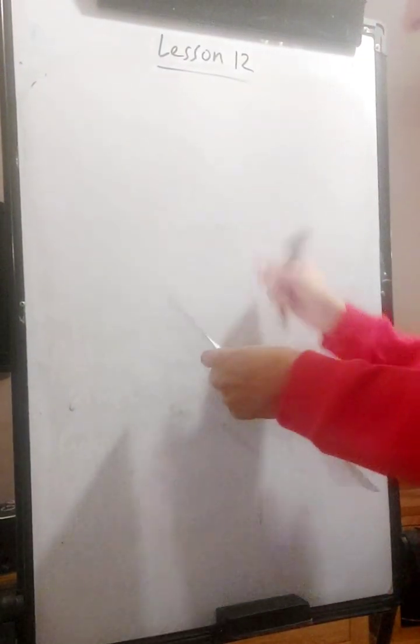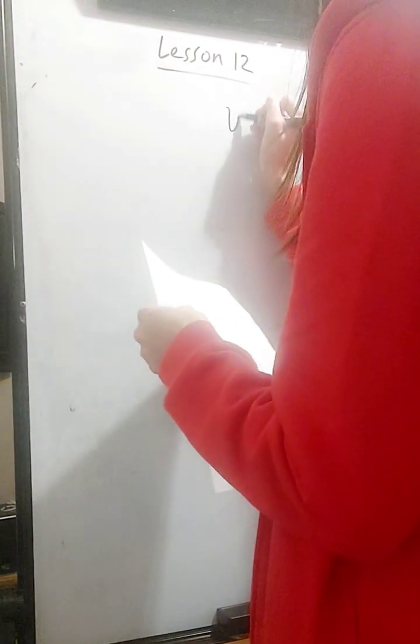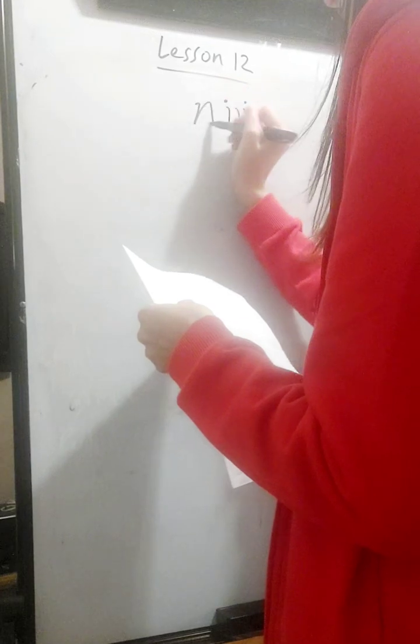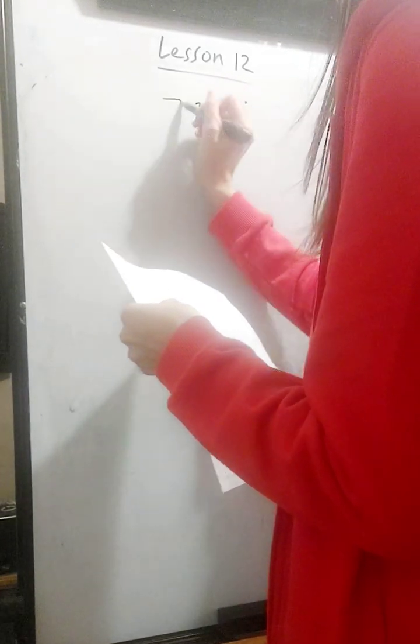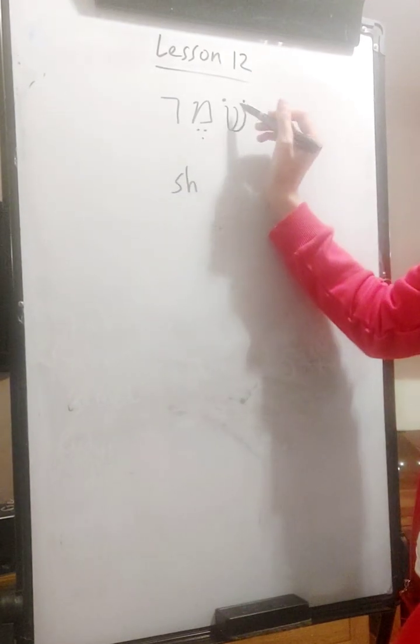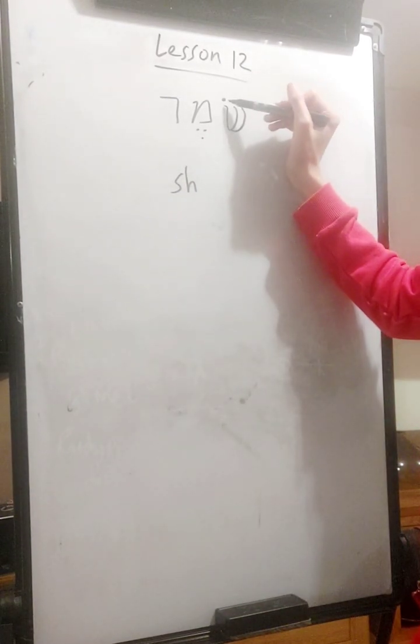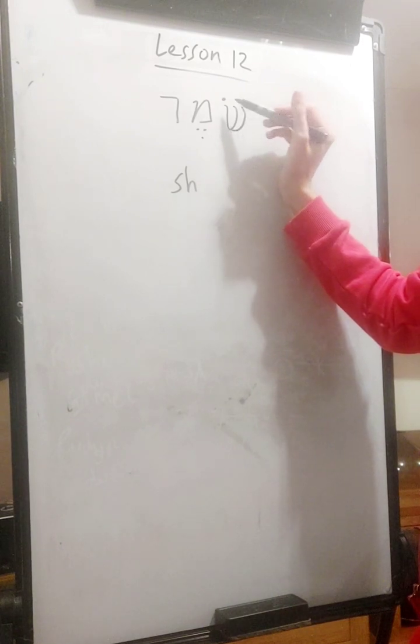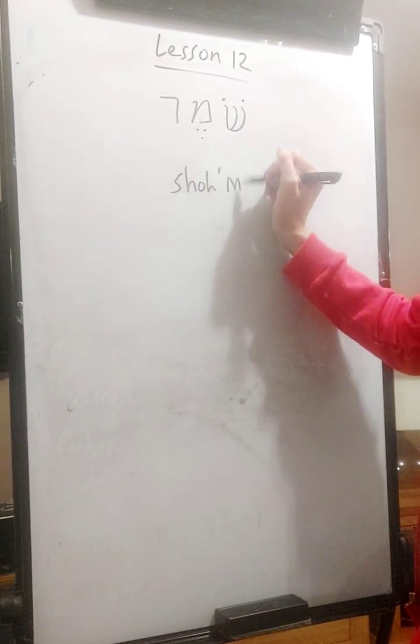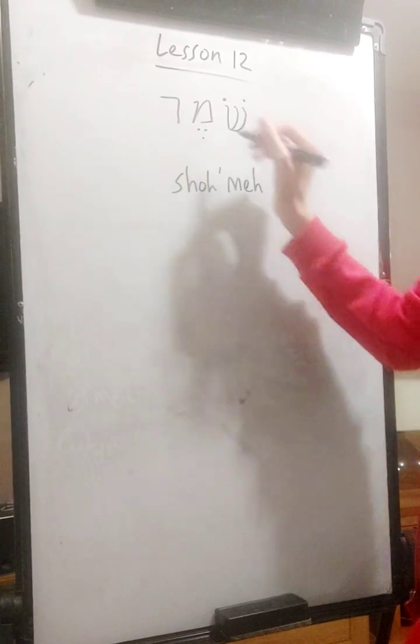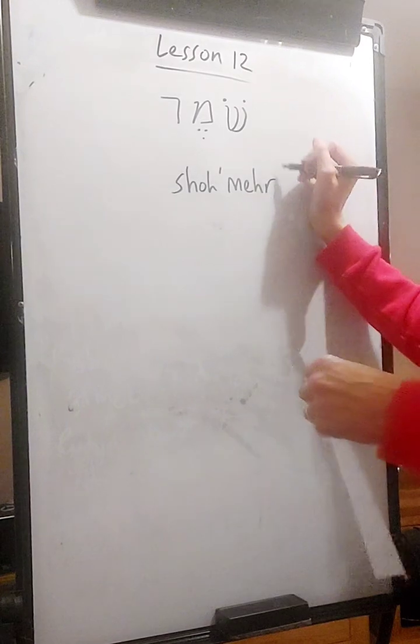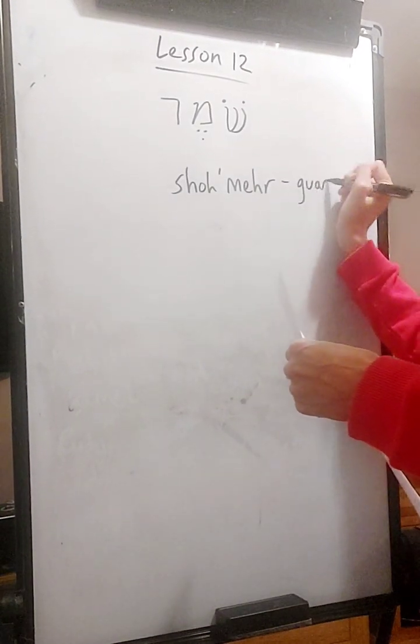So let's look at some Hebrew words. So the first word we'll do. Consonant sound Sh. Notice it got two dots, so this dot is the O vowel because there's no other vowel and every consonant usually got a vowel. So Sho consonant sound M vowel sound E consonant sound R. Shomer. And this means guard.